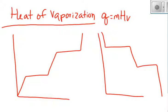So last video we talked about this equation Q equals mHf. The heat is equal to the mass times the heat of fusion for this lower plateau. In this video, we're going to look at this higher plateau. So Q equals mHv.